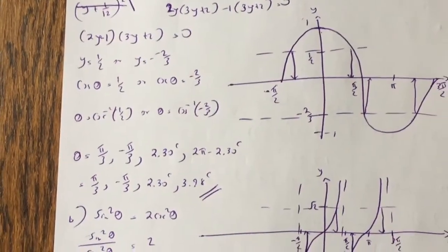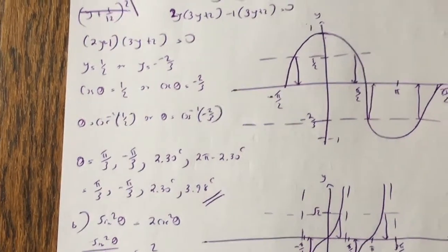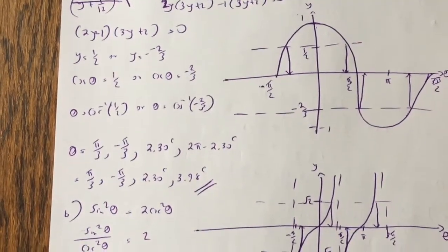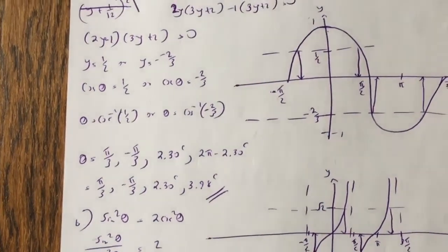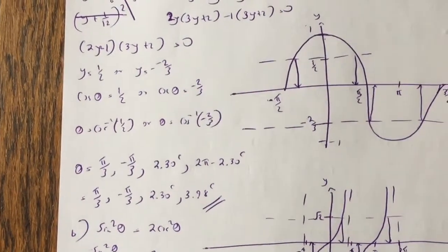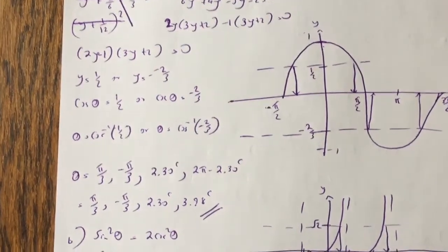And then you get the angles. So cos inverse of half is pi over 3, or minus pi over 3, cos inverse of minus 2 thirds is 2.3, or 2 pi minus 2.3, so the answers are pi over 3, minus pi over 3, 2.3, or 3.98.